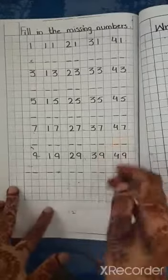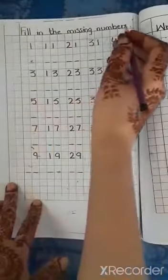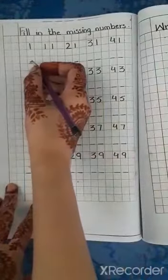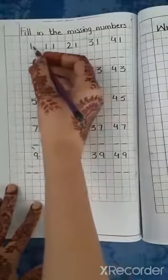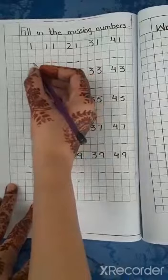Now open page number 112, fill in the missing numbers. We have here missing numbers written. For example, 1 says 2, 2 is missing number.